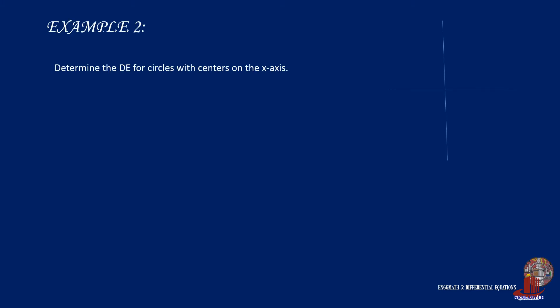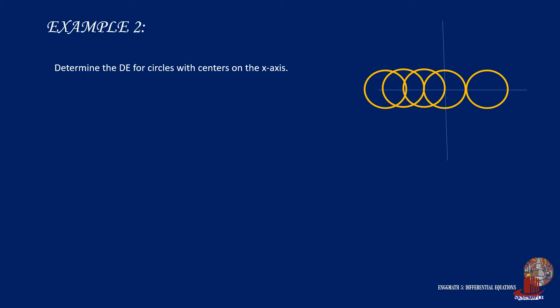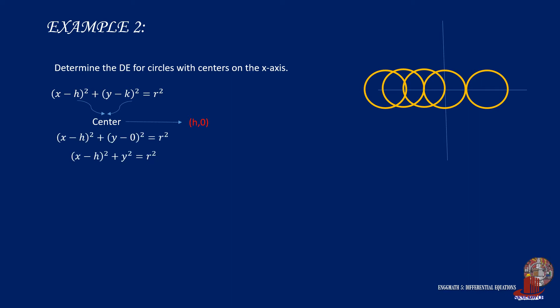Example number 2: Determine the differential equation for circles with centers on the x-axis. There will be many centers of the circles drawn along the x-axis. The formula to start with is x minus h squared plus y minus k squared equals r squared, where h remains h but k is taken as 0. So the circle formula is modified to x minus h squared plus y squared equals r squared.